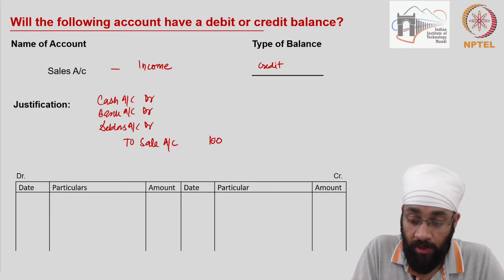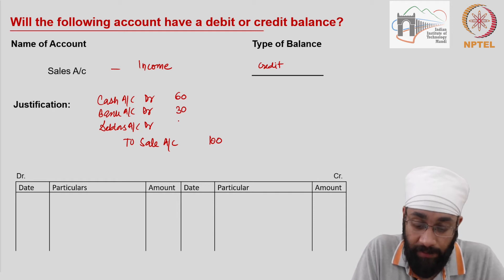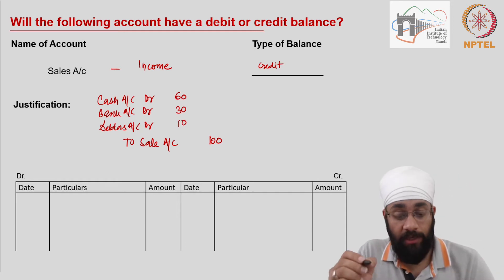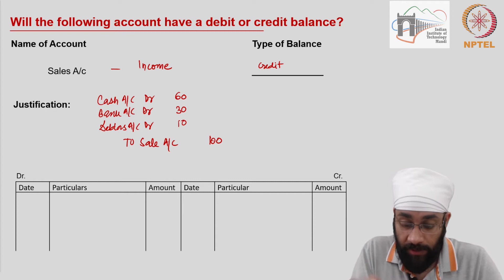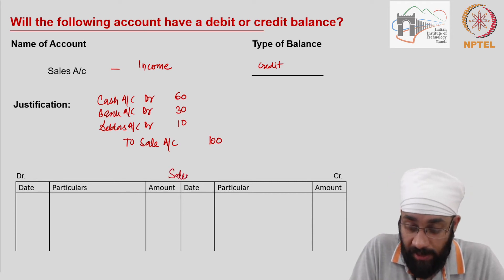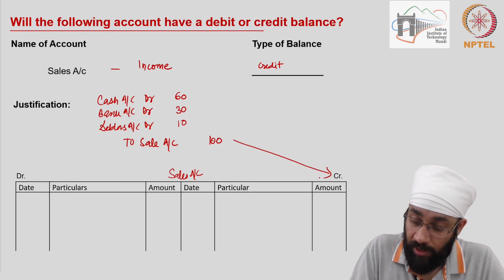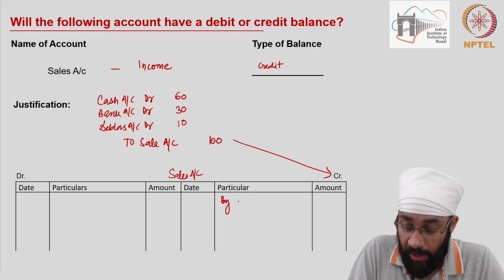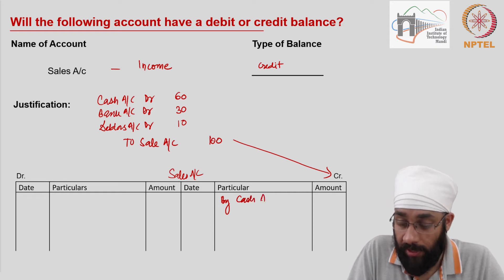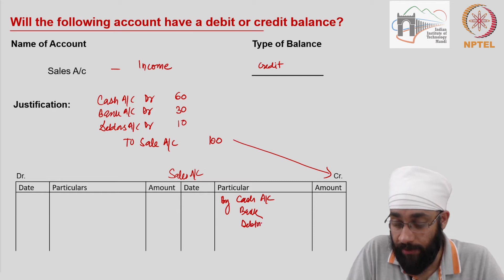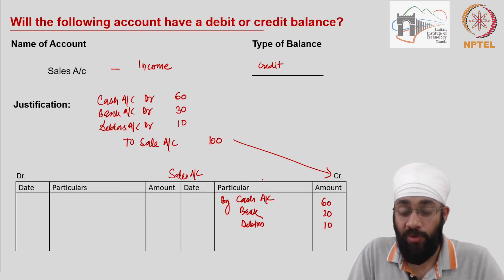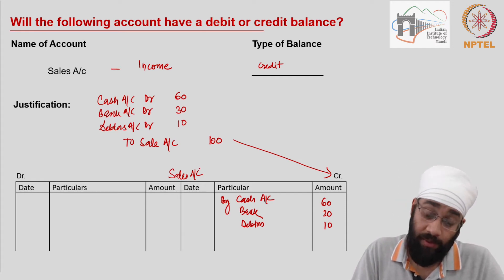Let's say you sold 100 rupees worth of goods: you received 60 in cash, 30 through bank, and the remaining 10 are to be recovered from the customer. When you prepare the sales account, you write on the credit side: by cash account, by bank account, and by debtors account. Everything is on the credit side.